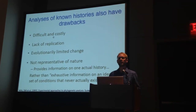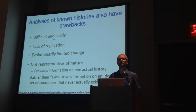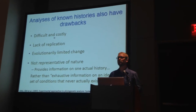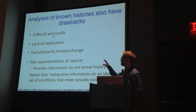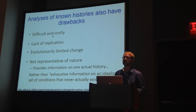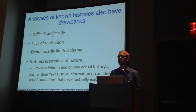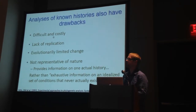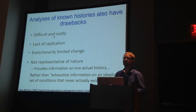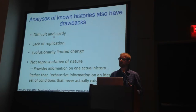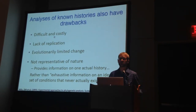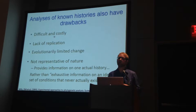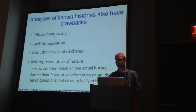Todd Oakley came out with an ardent critique of experimental phylogenetics back in 2010, and his two main issues were these. A couple points related to the feasibility of experimental phylogenetics: it's just very difficult to do, very costly, and because of this there's a lack of replication. It takes a lot of time on the researcher's part, and even still, you can't really observe that great an extent of evolutionary change.